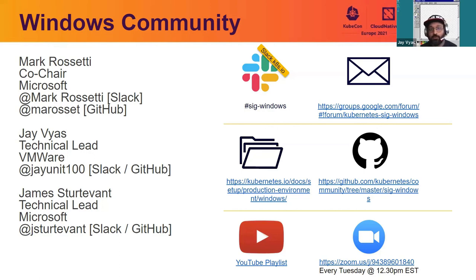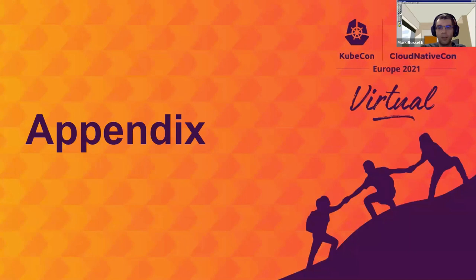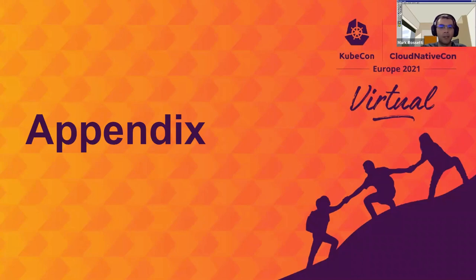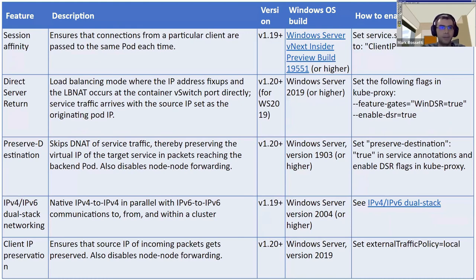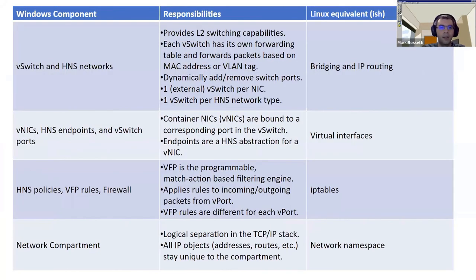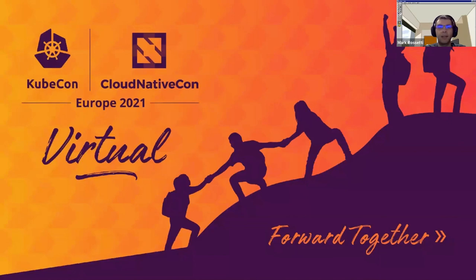Thank you, Jay. Thank you, everybody, for talking. We do have a couple of appendix slides we wanted to include for future reference — please download the slides; there's a link on the schedule page. There's more information on how all the different networking scenarios work, what's supported, what versions of Windows they're supported on, and all that good info. That concludes our talk. Thank you, everybody, for joining. We're going to open it up for Q&A now. And thank you, David, Kaya, and Jay especially for helping give this presentation.